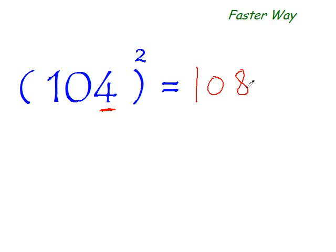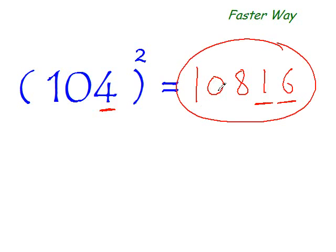So you get the first three digits of your answer. Now, two more digits to go. So what is the square of 4? It is 16. So that's your final answer, 10,816. Voila! Isn't that simple? Simple and fast.